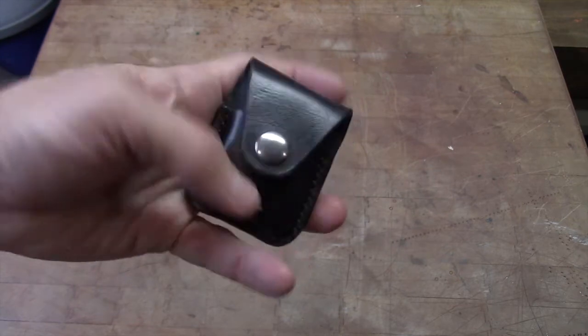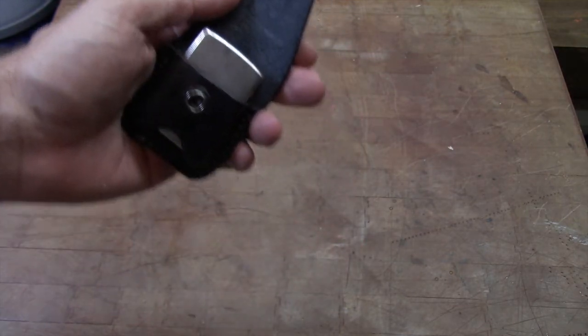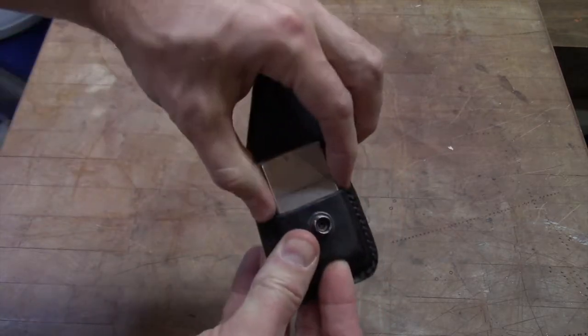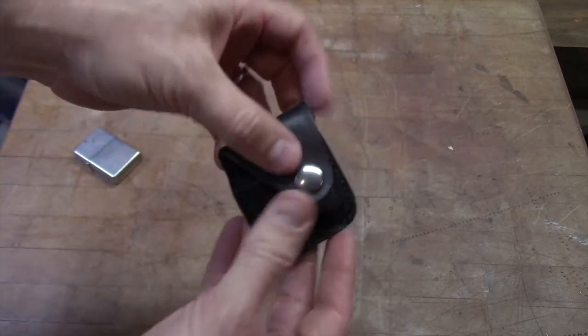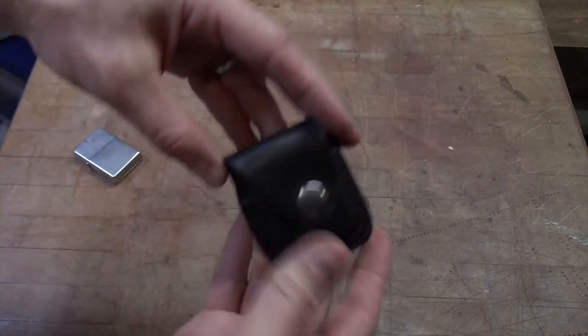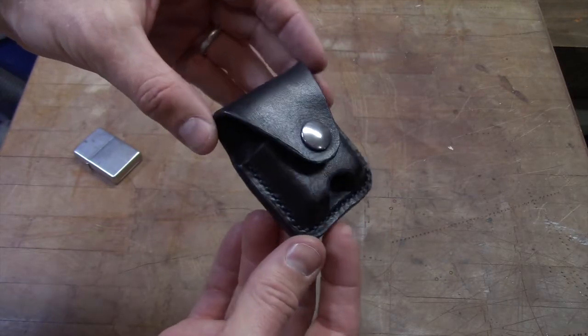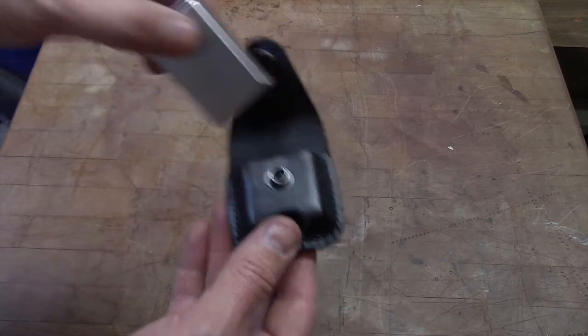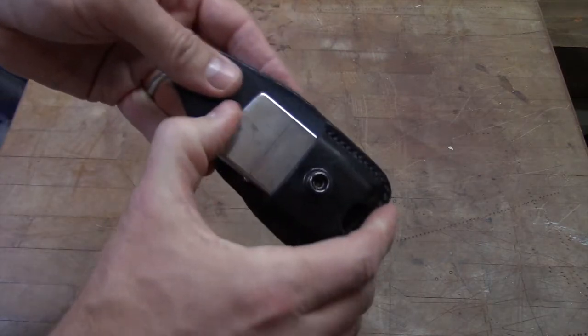And again, I went with the basic snap on that. You could use any variety of decorative snaps if you wanted to. Again, the lighter comes out very easily. Good fit and finish. I like the way this project turned out, especially since it started with no pattern and just a couple pieces of scrap leather.